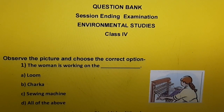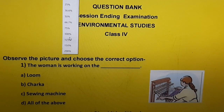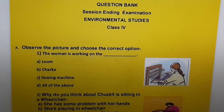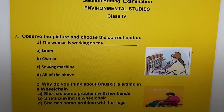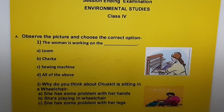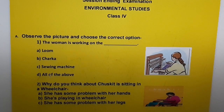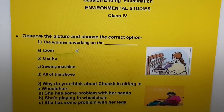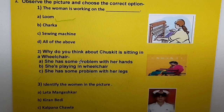Question one: Observe the picture and choose the correct option. The woman is working on the — a) loom, b) charkha, c) sewing machine, d) all of the above. The correct answer is a) loom.